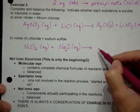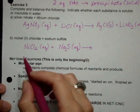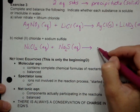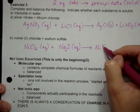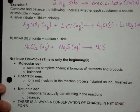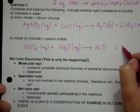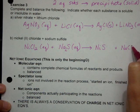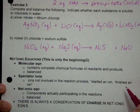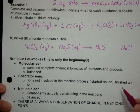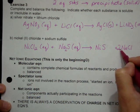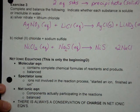We have a double replacement reaction, so the sodium and the nickel switch places. Now we have nickel two sulfide, that's a plus two and a minus two, and then we have sodium chloride, NaCl, plus one and minus one. We need to get the reaction balanced, which it is, except for we need two NaCl's.